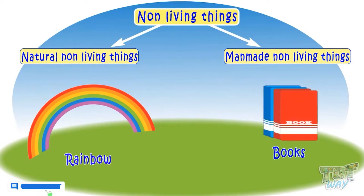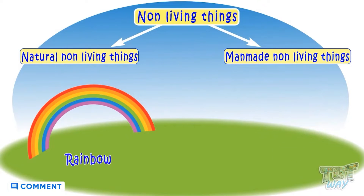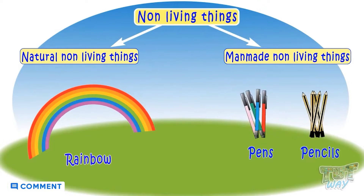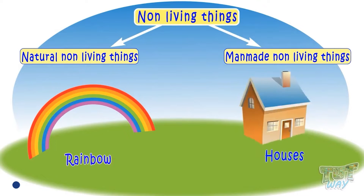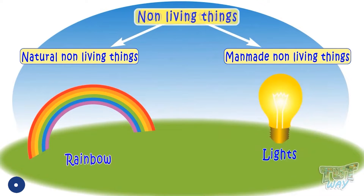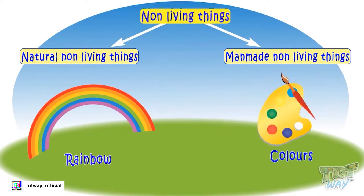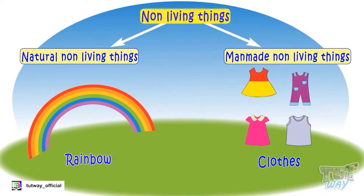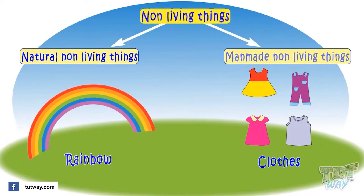Books, pens, pencils, houses, cars, pillars, lights, colors, and clothes — all these things are man-made non-living things.